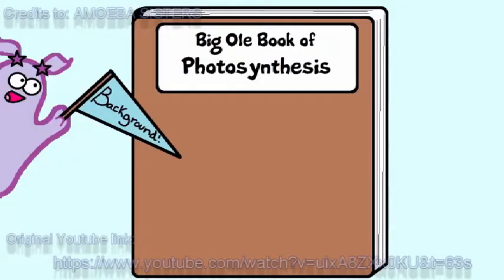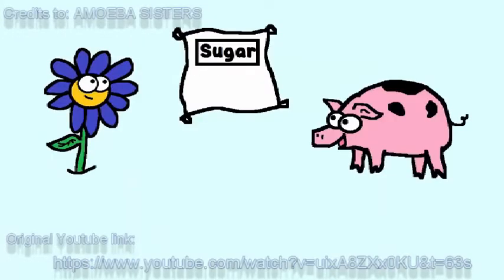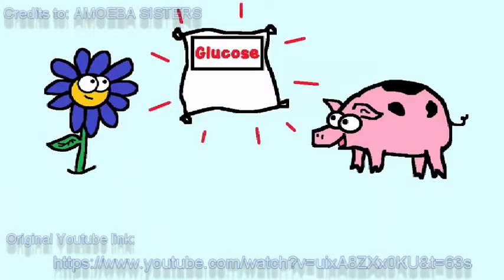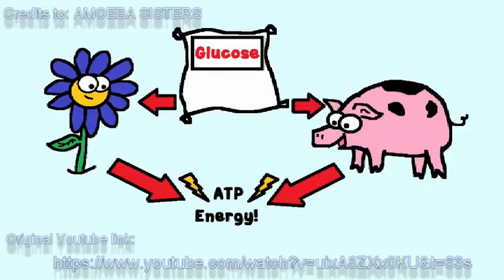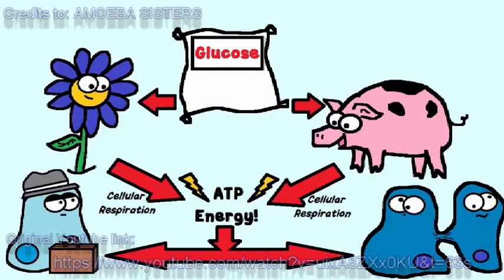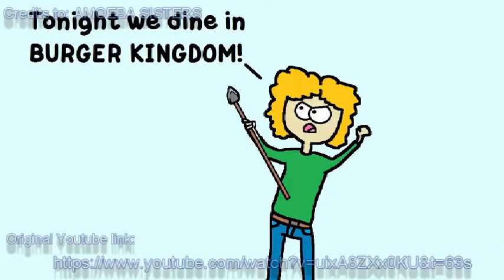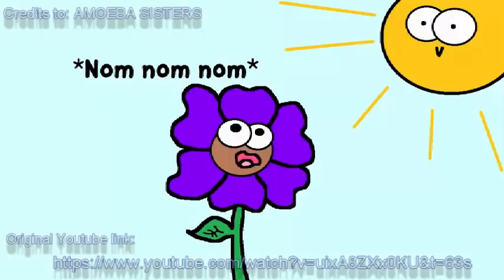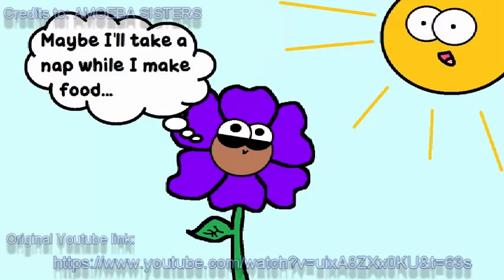First, a little background. Plants and animals need sugar, specifically glucose. Plants, as well as animals, use glucose to make ATP energy in a process known as cellular respiration. ATP energy is critical for cells to be able to carry out their cellular activities. But while we have to be in search of food to get glucose, plants instead can do photosynthesis to make their own glucose. So that's kind of nice because they don't have to go anywhere to get it.